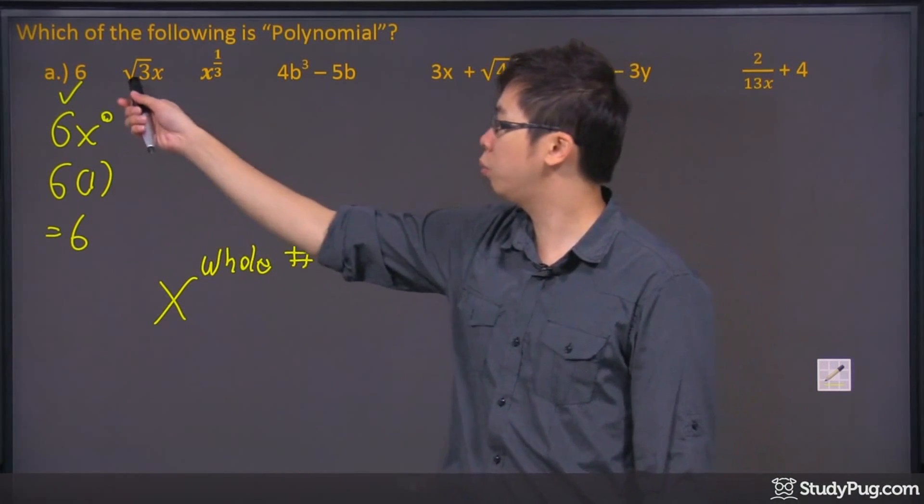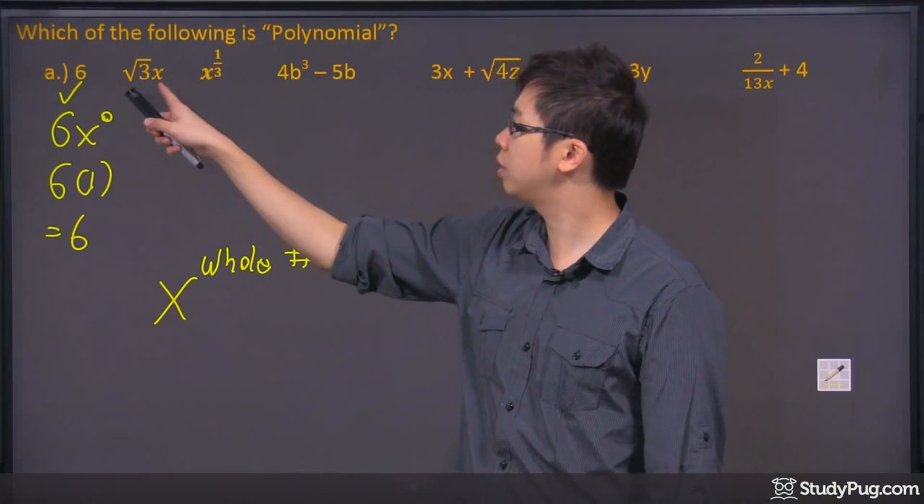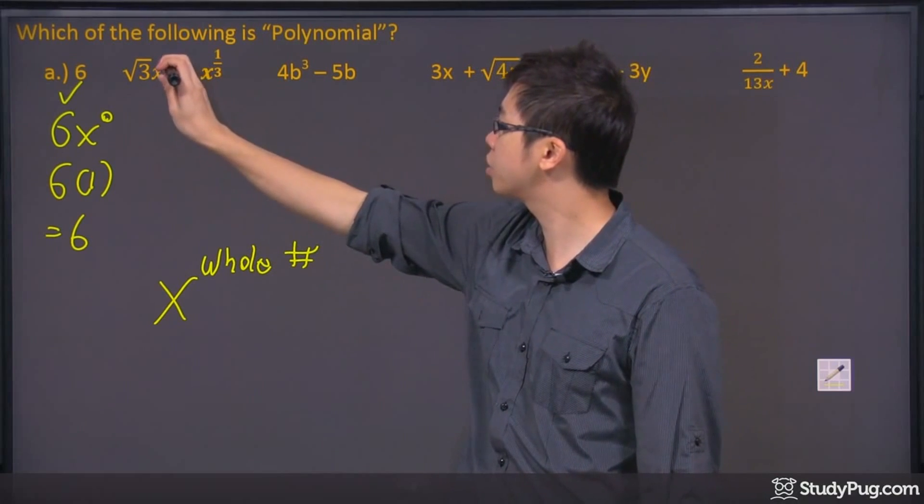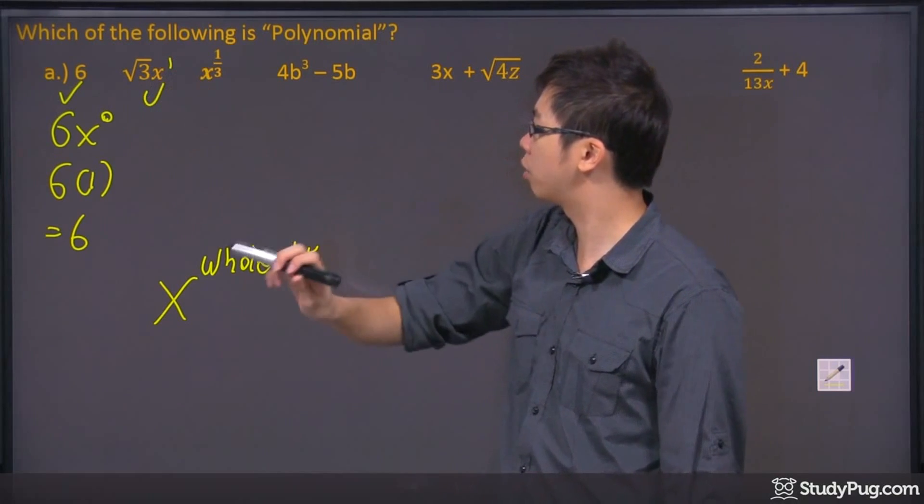The second one, don't worry about the root 3, just worry about the variable x, and that it's just a 1 on the top. So check mark for that.